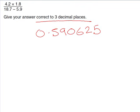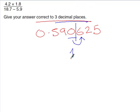Now round to three decimal places. Find the third decimal place, then look next door — if it's five or more, add one to that digit. The digit to the right is 6, which is five or more, so the third decimal place rounds up from 0 to 1. Digits to the left stay the same, digits to the right are dropped. The answer is 0.591.